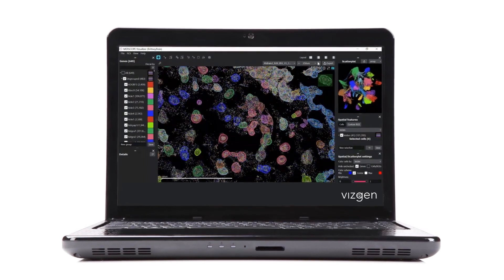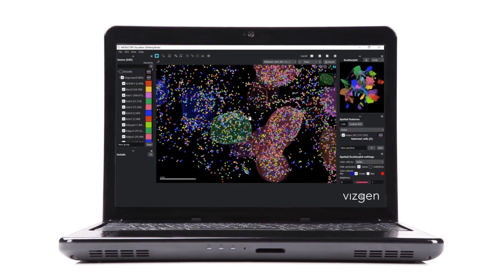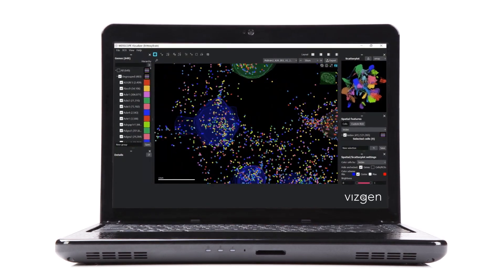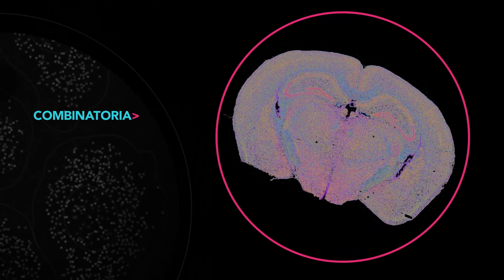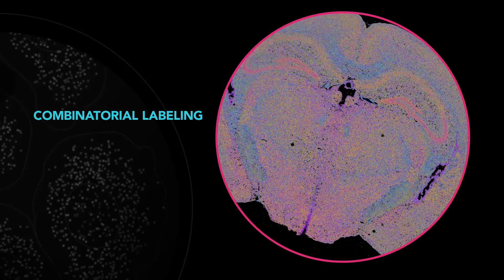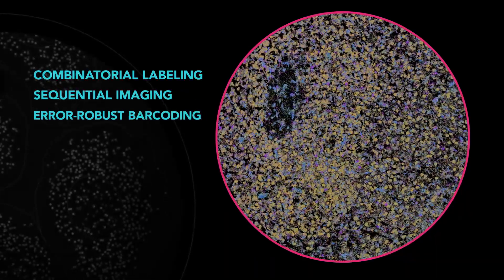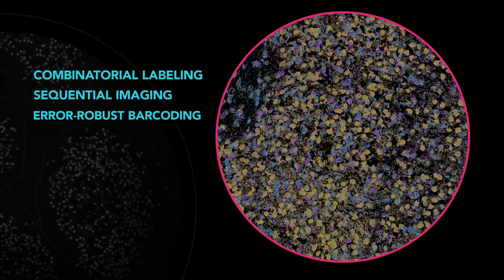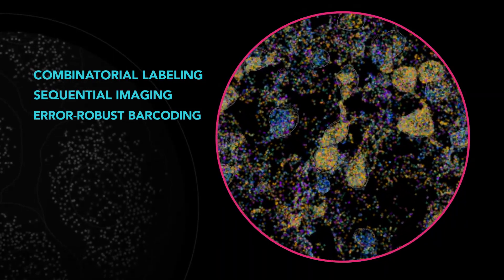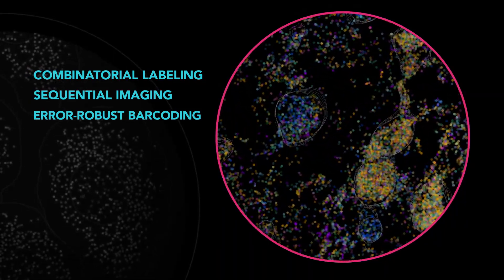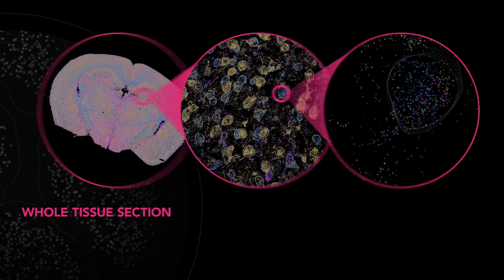Assisting researchers with gaining valuable biological insights, through combinatorial labeling, sequential imaging, and error-robust barcoding, MRFISH technology provides the highest detection efficiency and resolution available for spatially profiling the transcriptome.